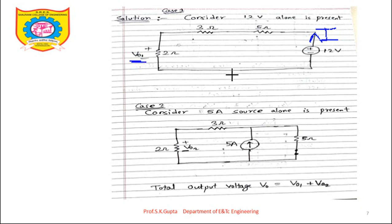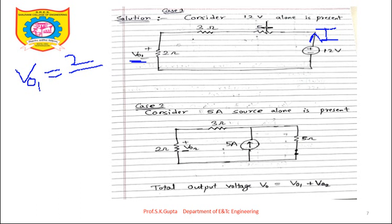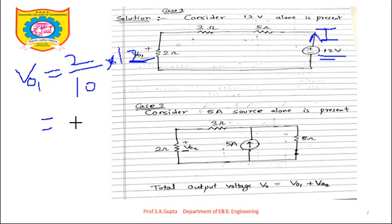A faster method: since the 12V source is in series with 5Ω, 3Ω, and 2Ω, we can use the voltage division rule. V01 = (2 / (2 + 3 + 5)) × 12 = (2/10) × 12 = 24/10 = 2.4V. So V01 = 2.4V.